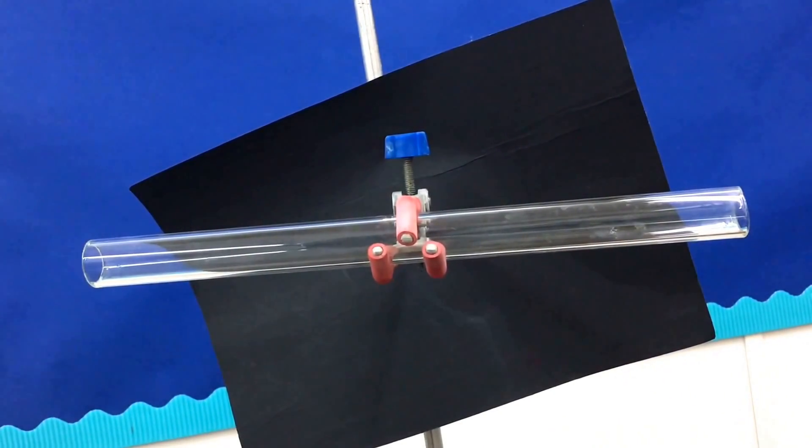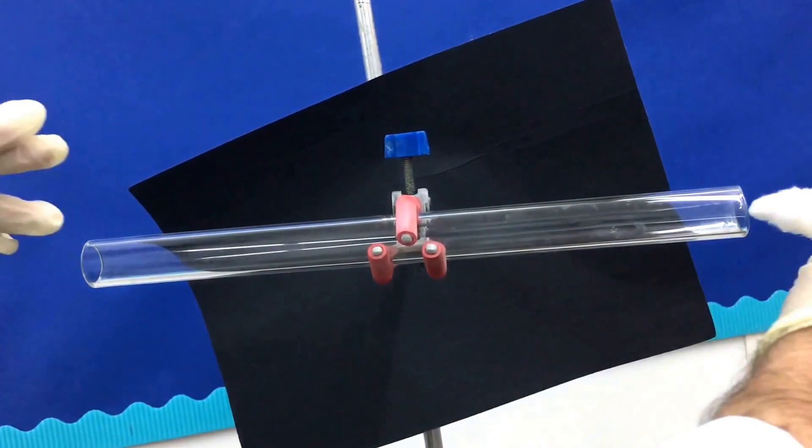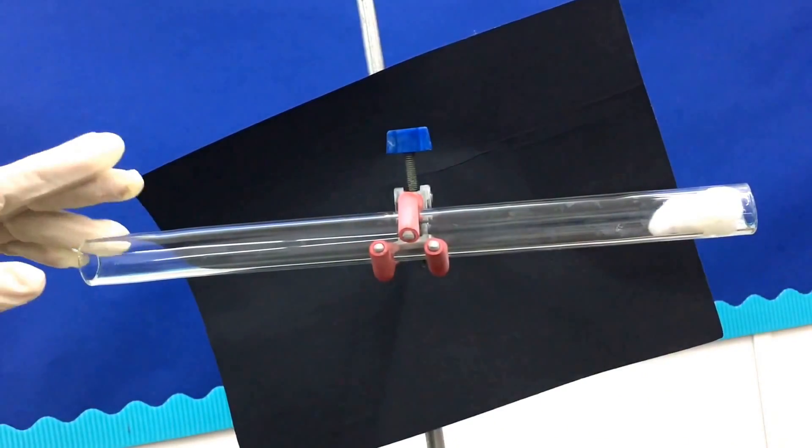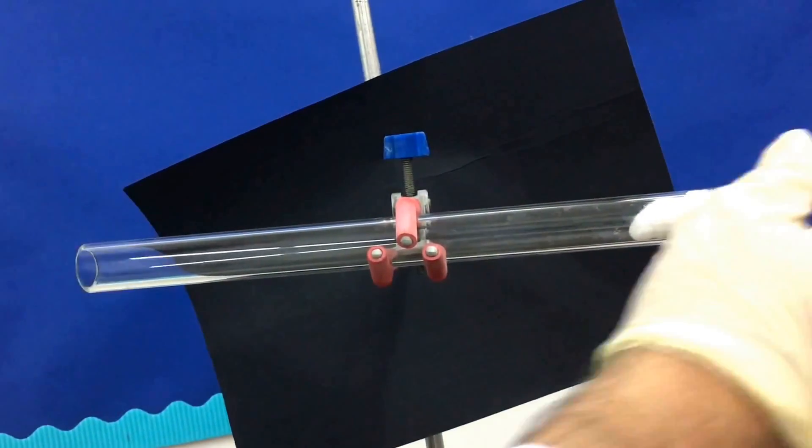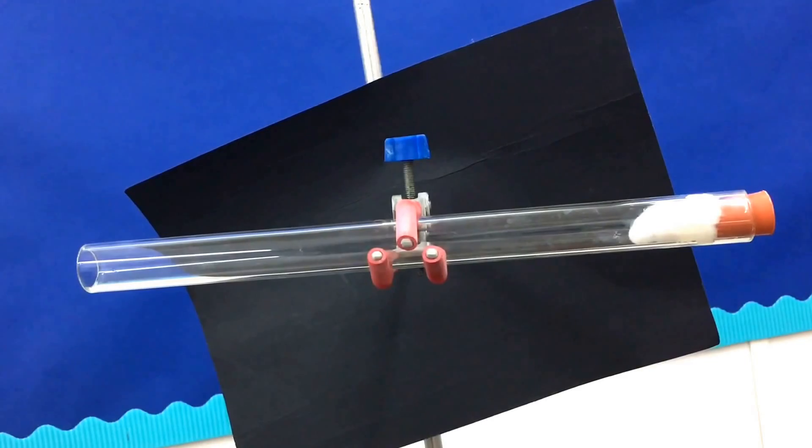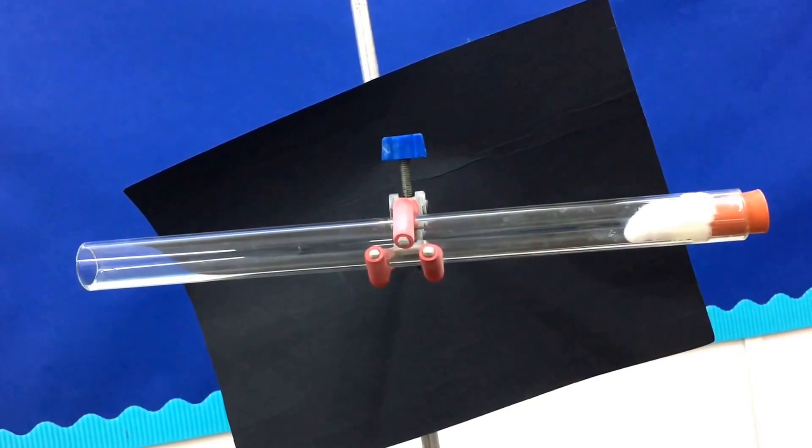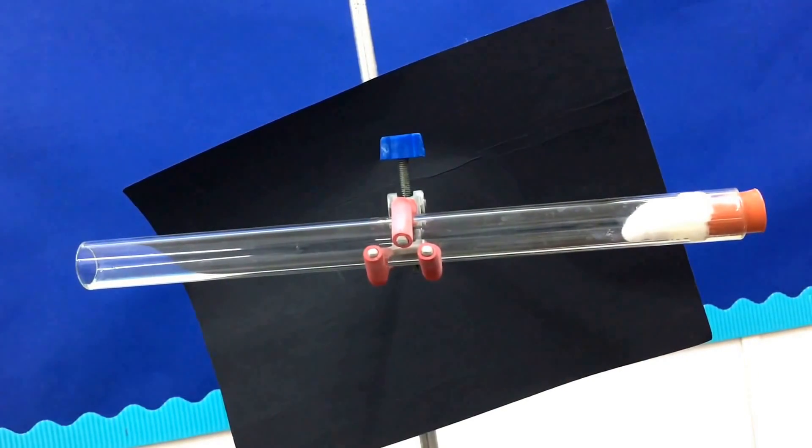Into the right hand side of the tube we put some cotton wool that's soaked with concentrated hydrochloric acid and to the left hand side of the tube we put some cotton wool that's soaked with concentrated ammonia.